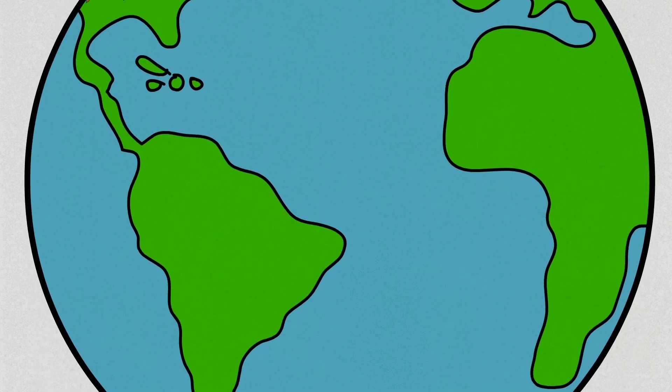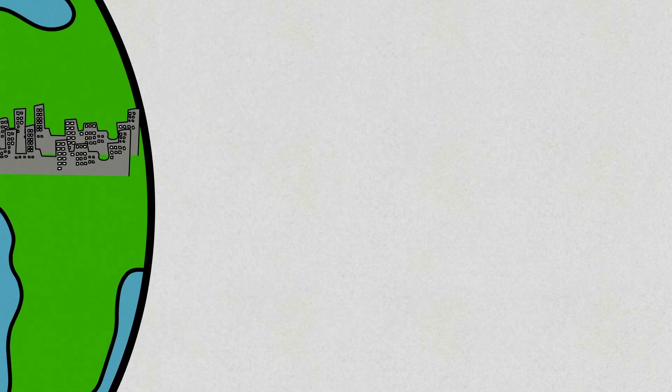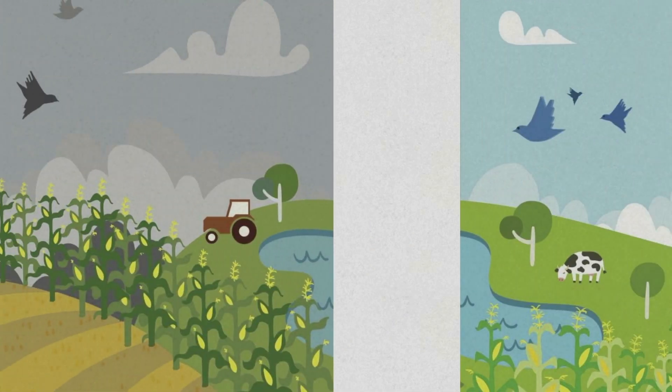To ensure food can be produced with sufficient quantity and quality to meet the demands of a growing population, a transformation in food production systems is required.